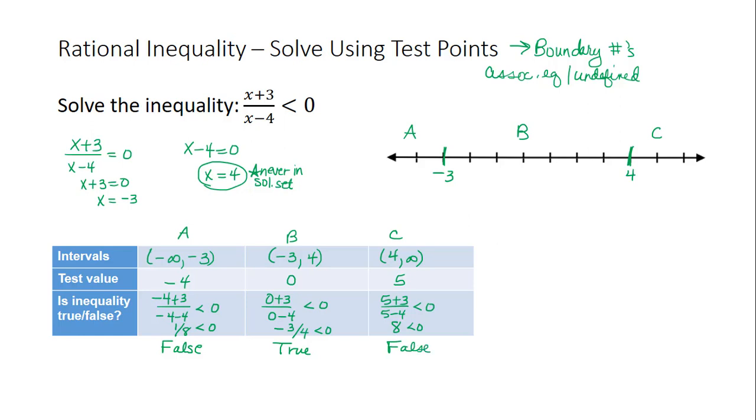So the only region that contains solutions is region B. I will shade region B on the number line. So I'm shading between negative 3 and 4.